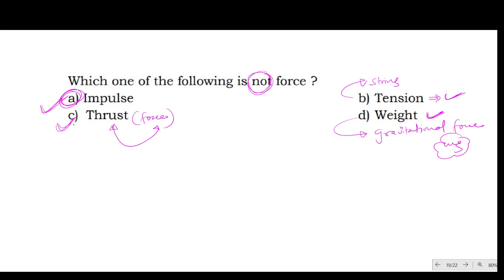This is not a force. Why is this not a force? Because impulse is nothing but force into time. This is a new physical quantity, this is not a force itself. It becomes a force with time, so this is the impulse that is not a force.